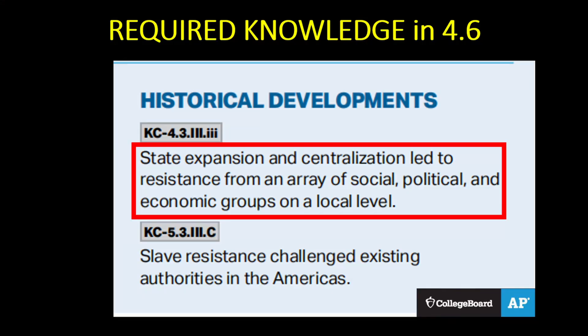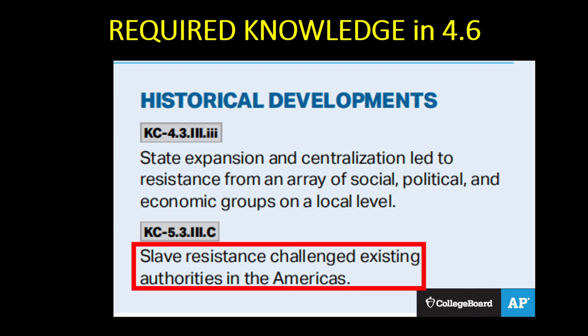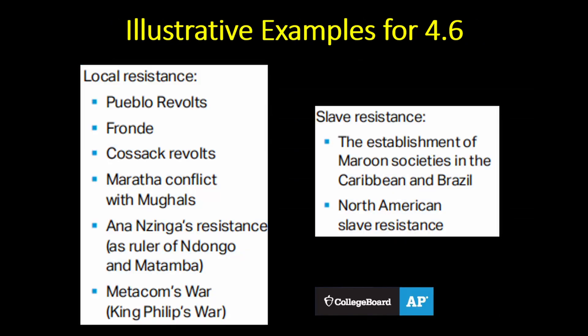You only need to know two things in 4.6. One, state expansion and centralization led to resistance from an array of social, political, and economic groups on a local level. And two, slave resistance challenged existing authorities in the Americas. After that, it's just illustrative examples. Keep in mind that these are resistance movements to both Unit 3 land-based empires and Unit 4 maritime empires.